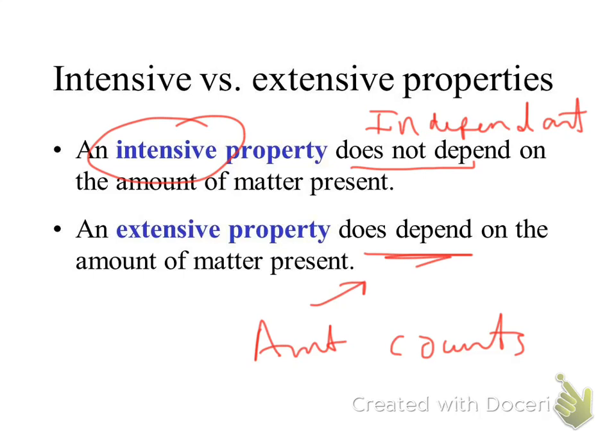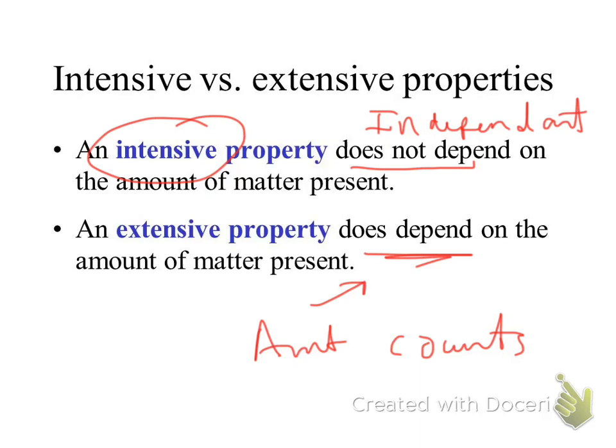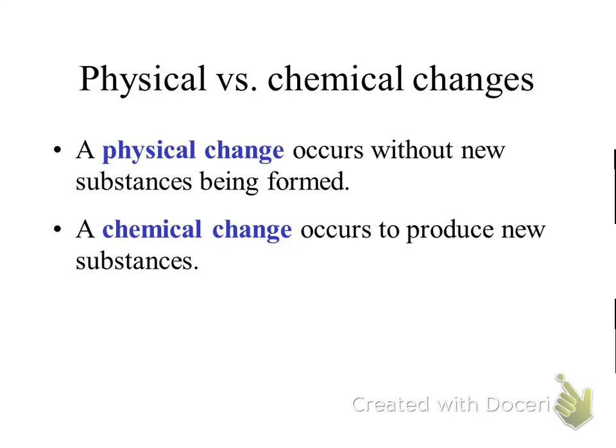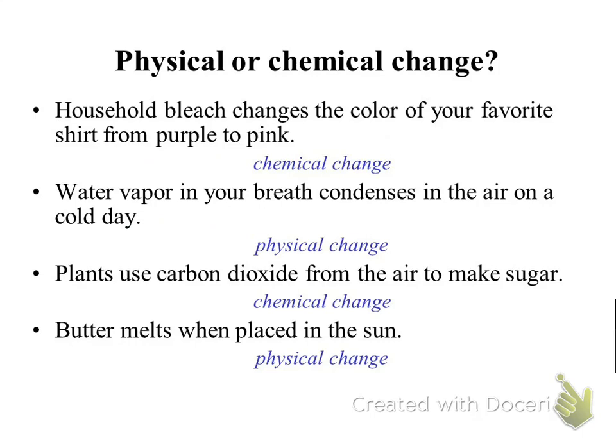Water boils — changes phase from liquid to gas — at 100°C. It doesn't matter if you have a cup of water or a big vat of water; that's independent of amount. Physical change and chemical change go along with physical and chemical property. A physical change: no molecules were harmed. A chemical change: new substances were formed. Those are some examples of chemical changes and physical changes.